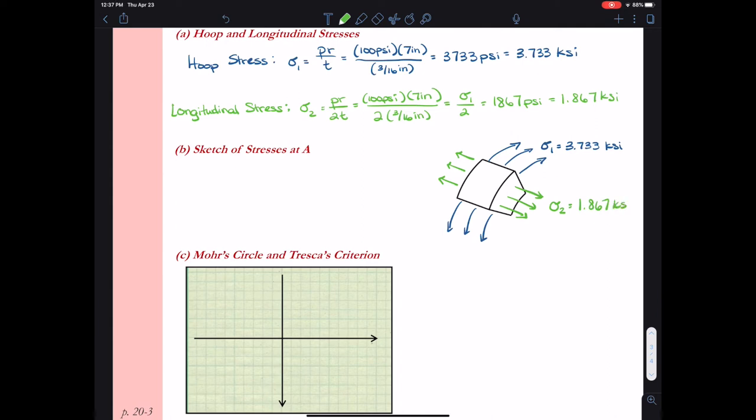We should also consider sigma 3, and this would be the pressure on the inside of the cylinder. So the pressure sigma 3 would be equal to negative 100 psi because it's pressing against the surface at A. This would correspond to negative 0.1 ksi. When we look at that negative 0.1 ksi of sigma 3 compared to sigma 1 and 2, we see that it's relatively small. And because we're using thin-walled analysis, we're going to assume sigma 3 is equal to zero.